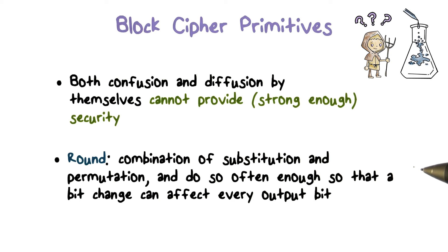That is, the first round affects some parts of the ciphertext, and the next round further propagates these effects into other parts of the ciphertext. Eventually, all bits of the ciphertext are affected.